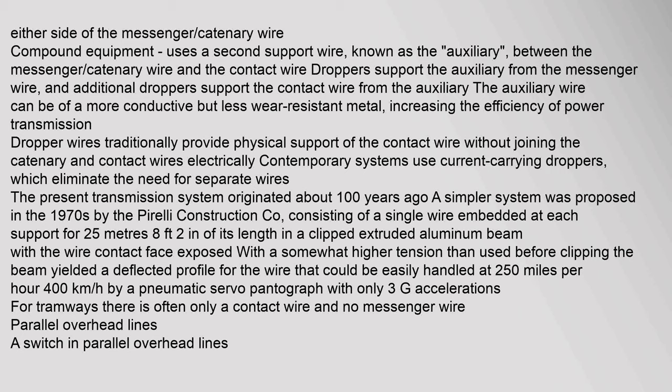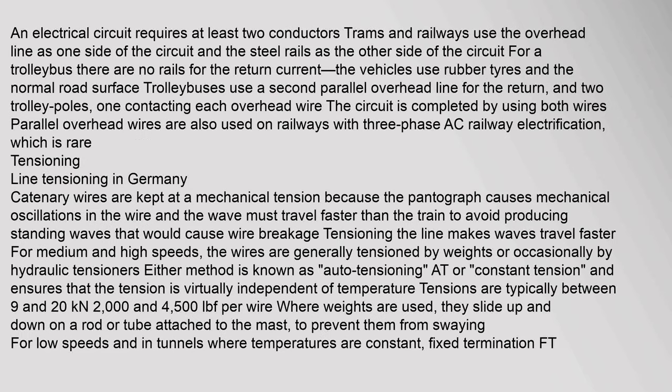The auxiliary wire can be of a more conductive but less wear-resistant metal, increasing the efficiency of power transmission. Dropper wires traditionally provide physical support of the contact wire without joining the catenary and contact wires electrically; contemporary systems use current-carrying droppers which eliminate the need for separate wires. The present transmission system originated about 100 years ago. A simpler system was proposed in the 1970s by the Pirelli Construction Co., consisting of a single wire embedded at each support.